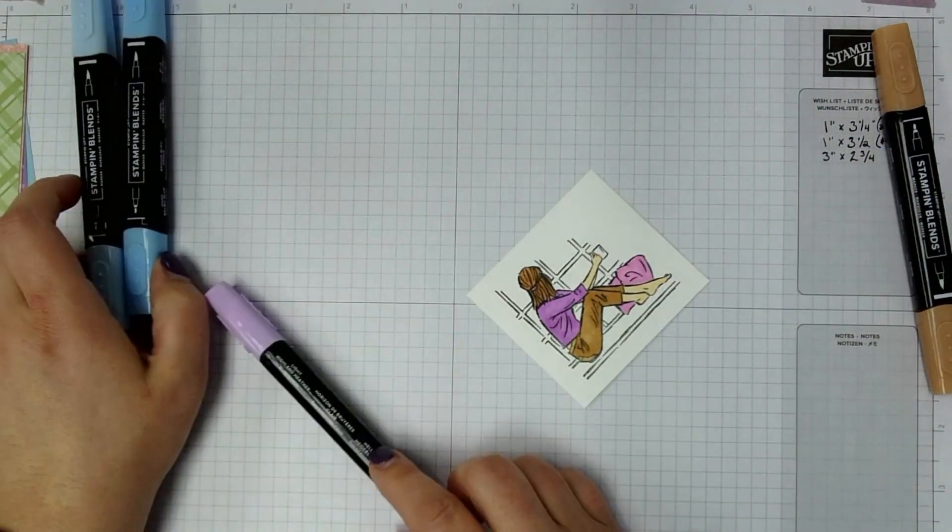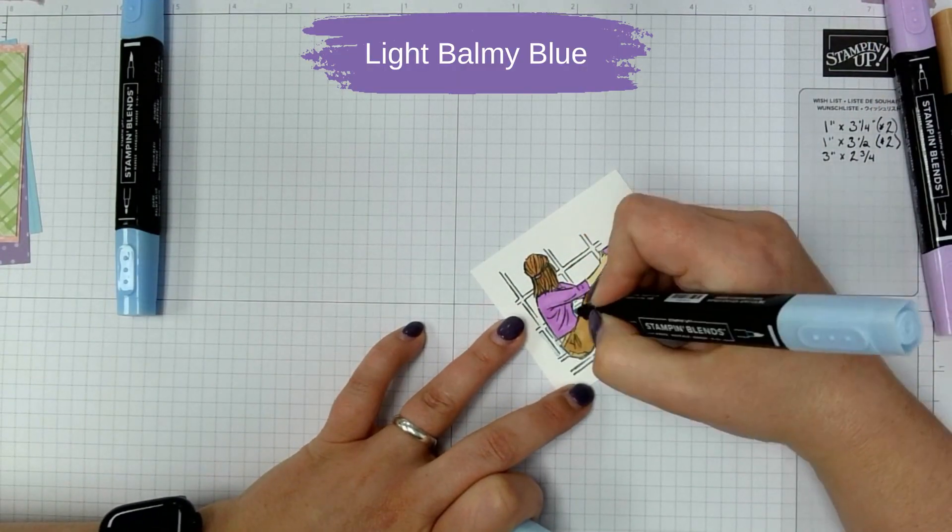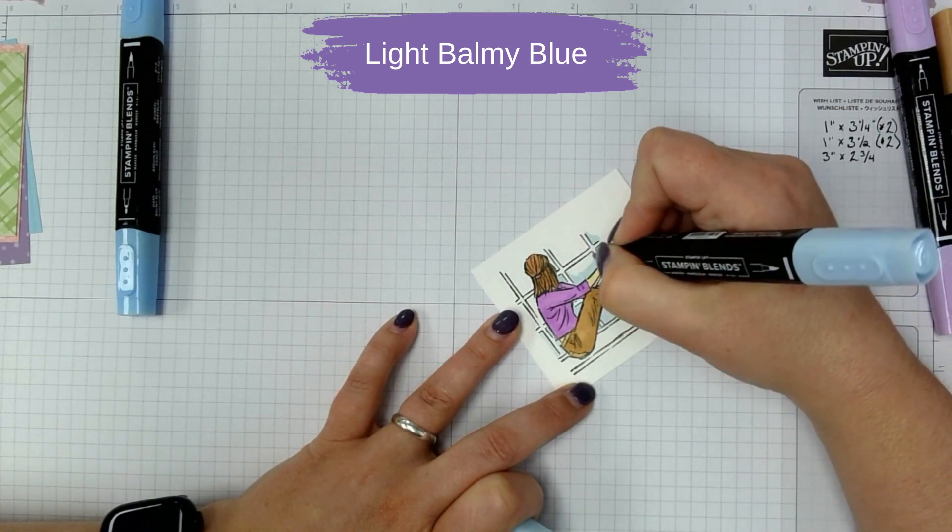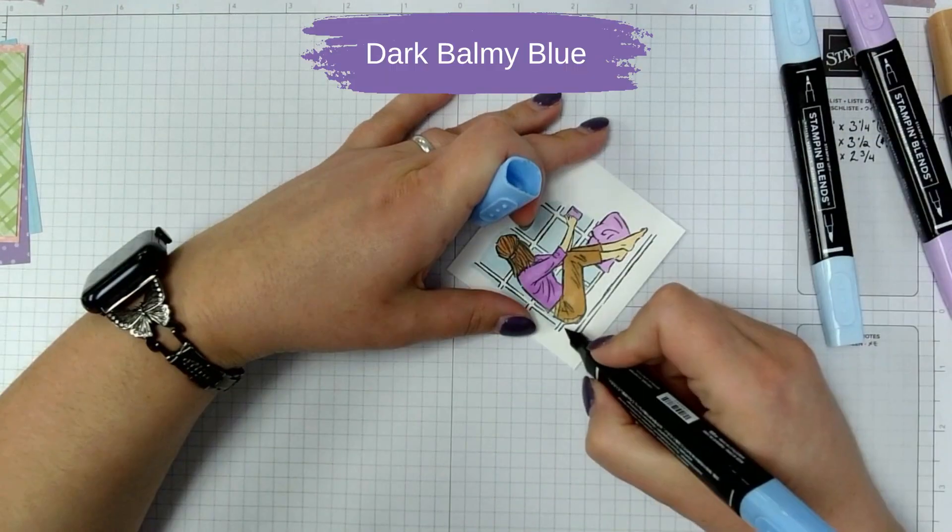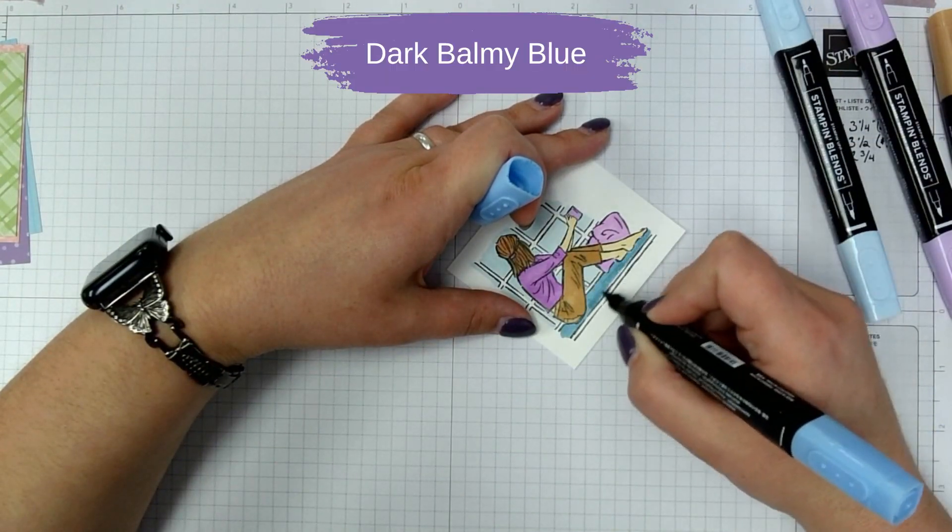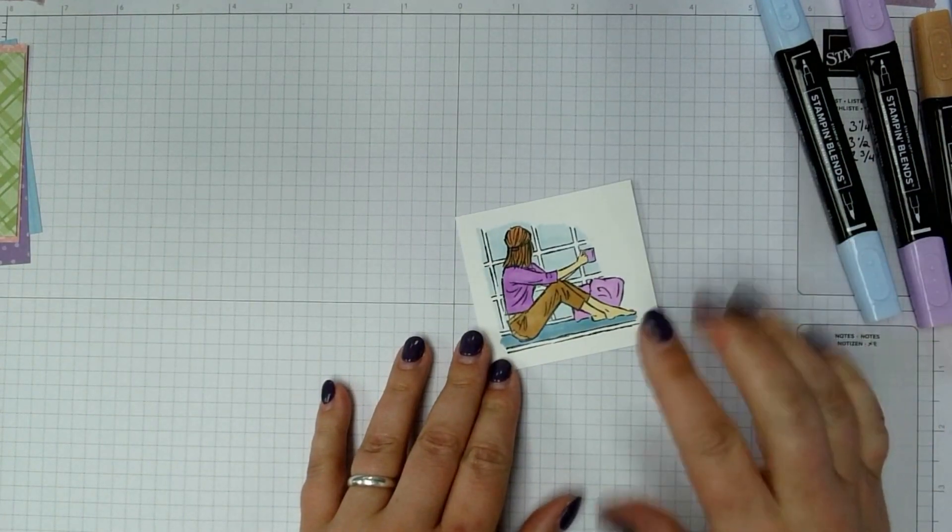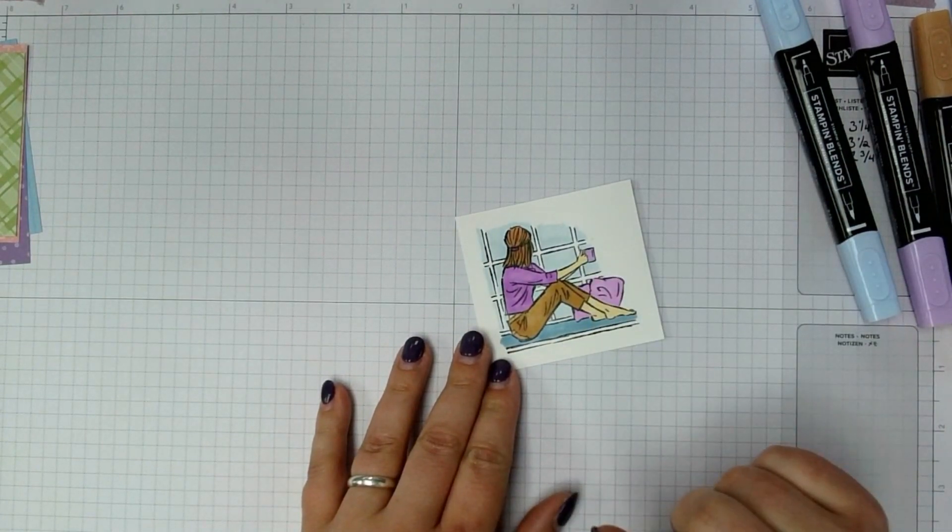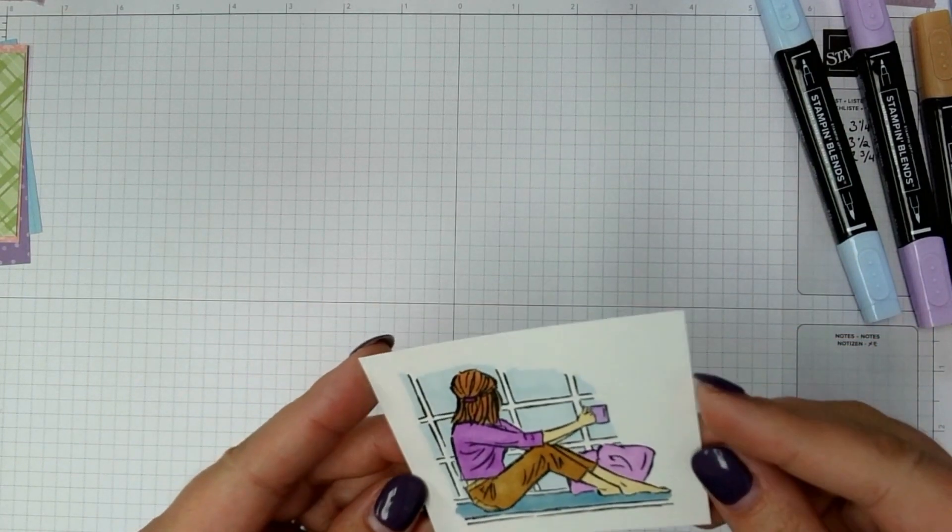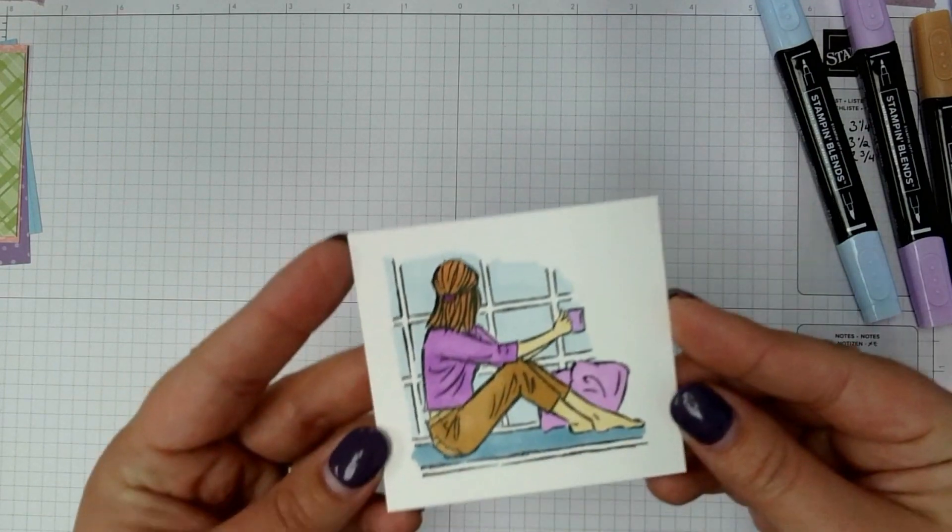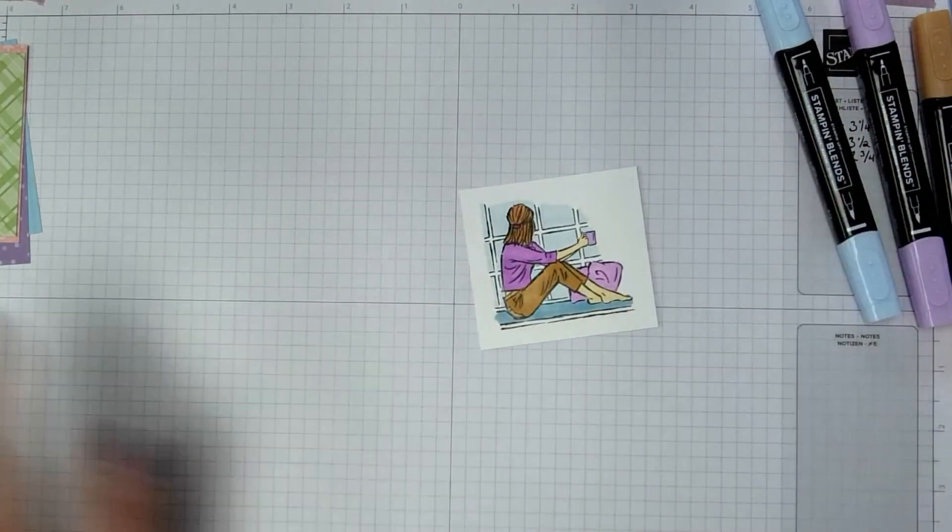Did you catch that I couldn't decide what color to color the mug? So I colored it blue, and then I went over it again with the Highland Heather. And you can't really see the blue on it this time, but that's okay.